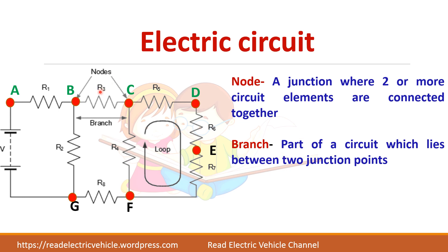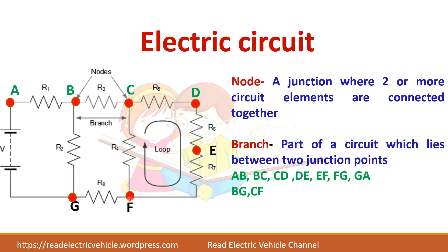Next is a branch. A branch is the part available between two nodes. So here A-B, B-C, C-D are all called branches. B-G is a branch and C-F is also a branch.